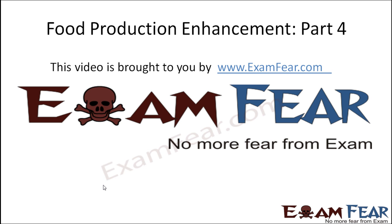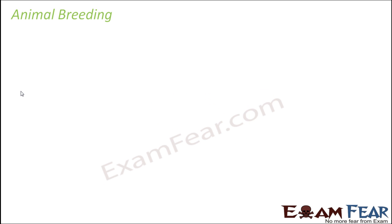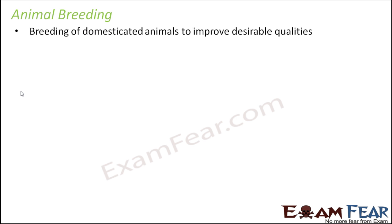Hello friends, this video on food production enhancement part 4 is brought to you by examfear.com. The next topic is animal breeding. Breeding is nothing but mating — it is the breeding of domesticated animals to improve desirable qualities. The most important goal here is to get those desirable qualities.